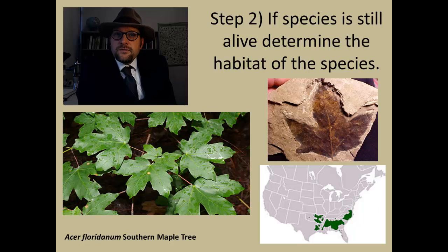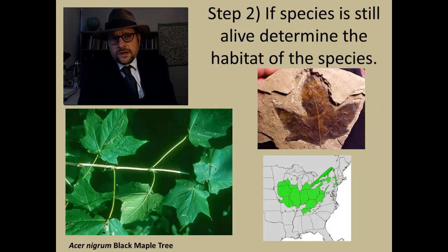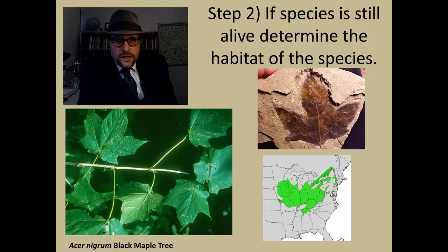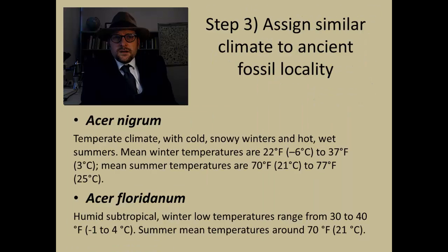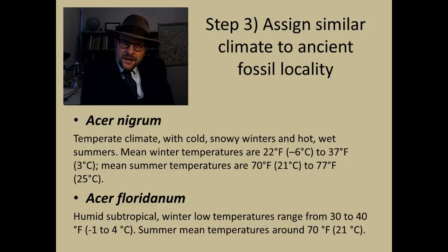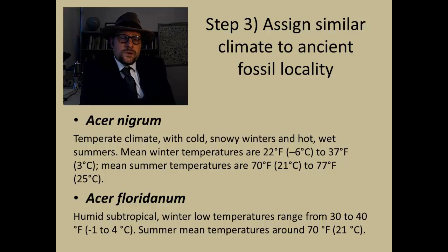But we need to be very careful here. Is our fossil really a member of this species? This is the black maple tree Acer nigrum, which also looks a lot like our fossil leaf, and it grows in the much cooler climate similar to Illinois and southern Michigan. So was the climate in Colorado more cold or more warm? Indeed, this is one of the big problems with using the Coexistence Model. Depending on how confident our identifications are, it can have a powerful effect on the resulting climate range that we reconstruct from the past.